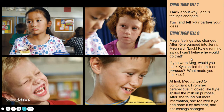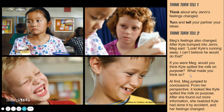Next, let's look at Meg's reactions. Meg's feelings also changed. After Kyle bumped into Jenny, Meg said, 'Look, Kyle's running away. I can't believe he would do that.' What do you think made Meg say that? Did you think Kyle was spilling the milk on purpose to make fun of Jenny? That's called jumping to conclusions — that happens when we think too quickly and assume something. When we get more information, like listening to what Kyle had to say, we realized that Kyle had done everything as an accident. And then, of course, Meg's feelings changed too.